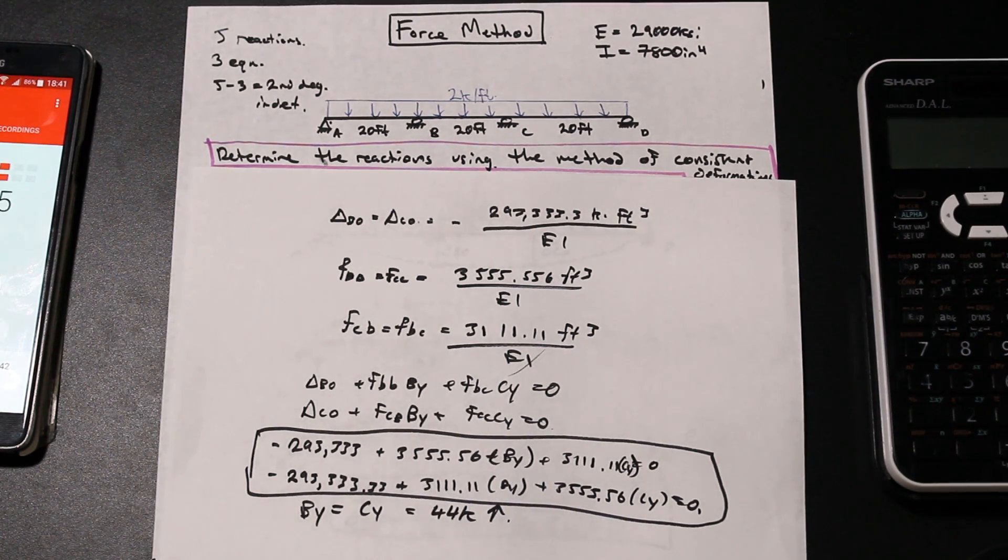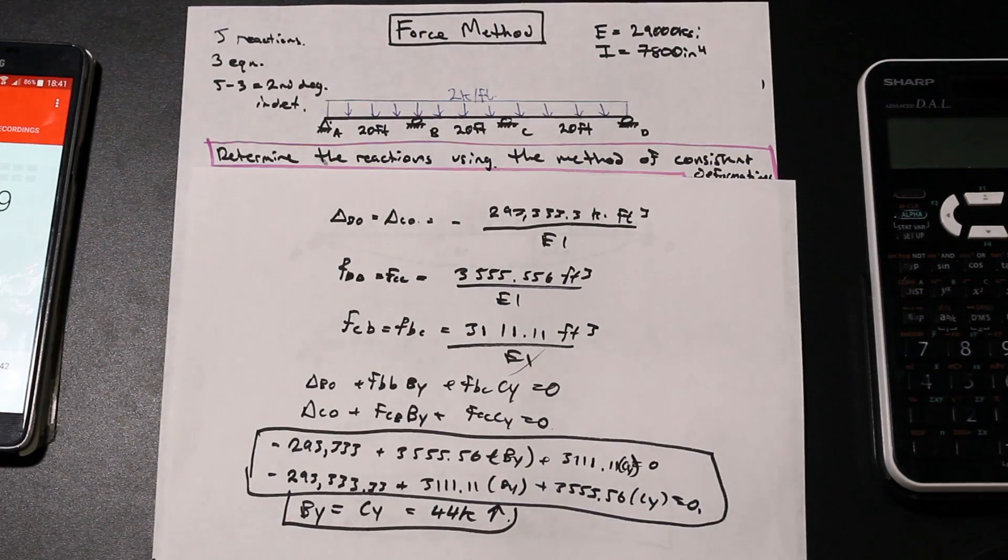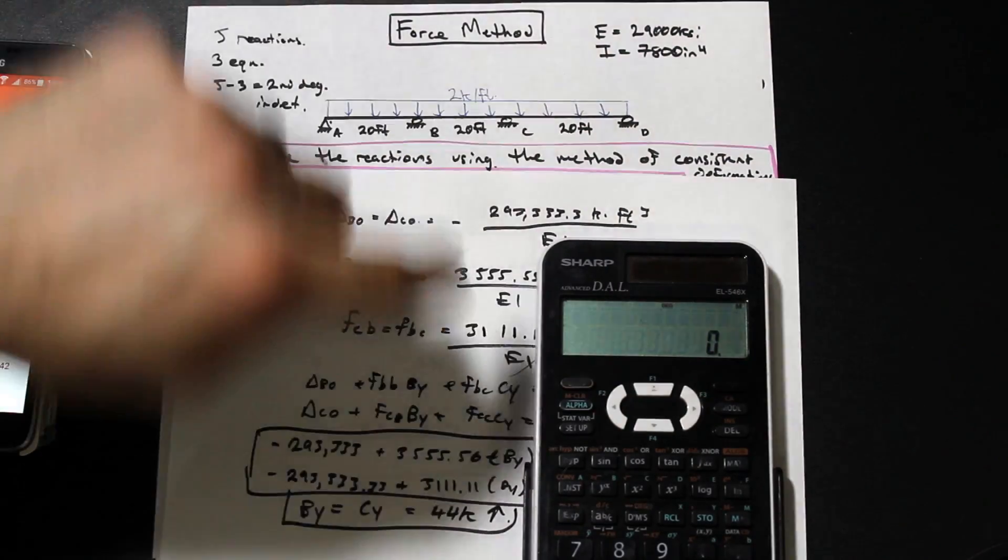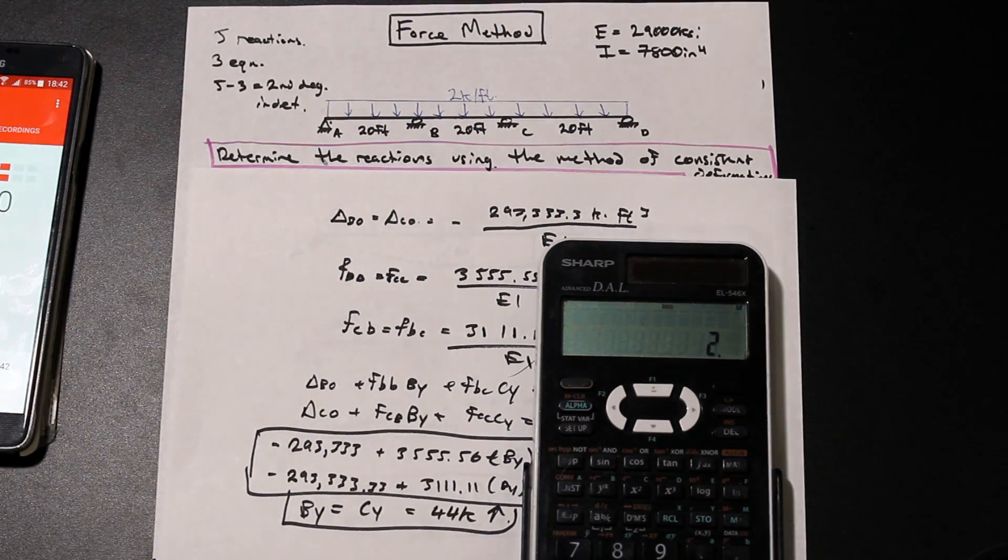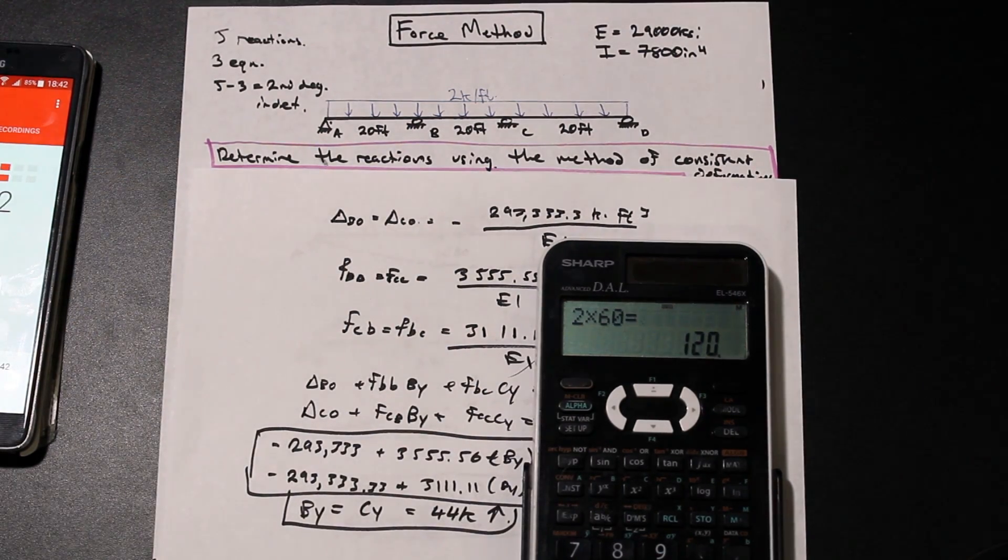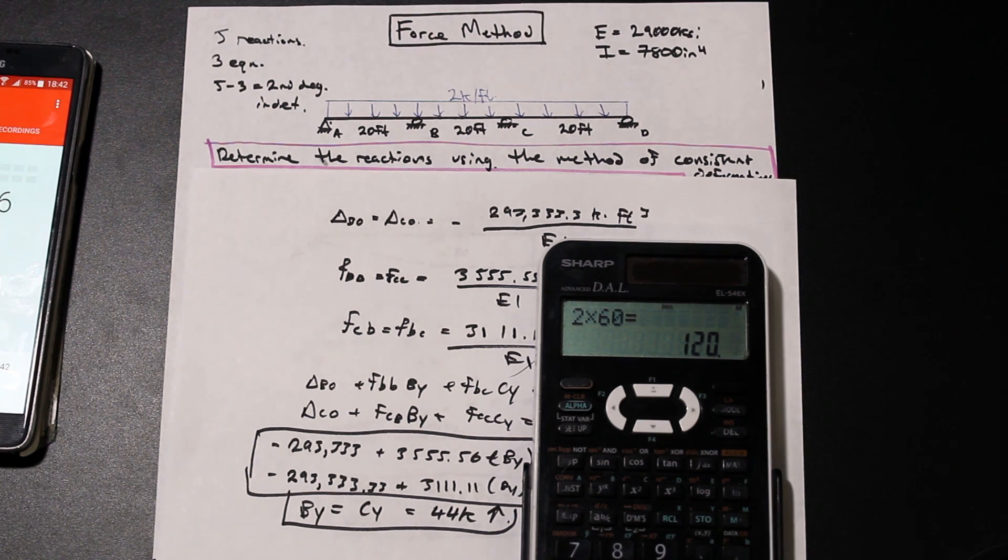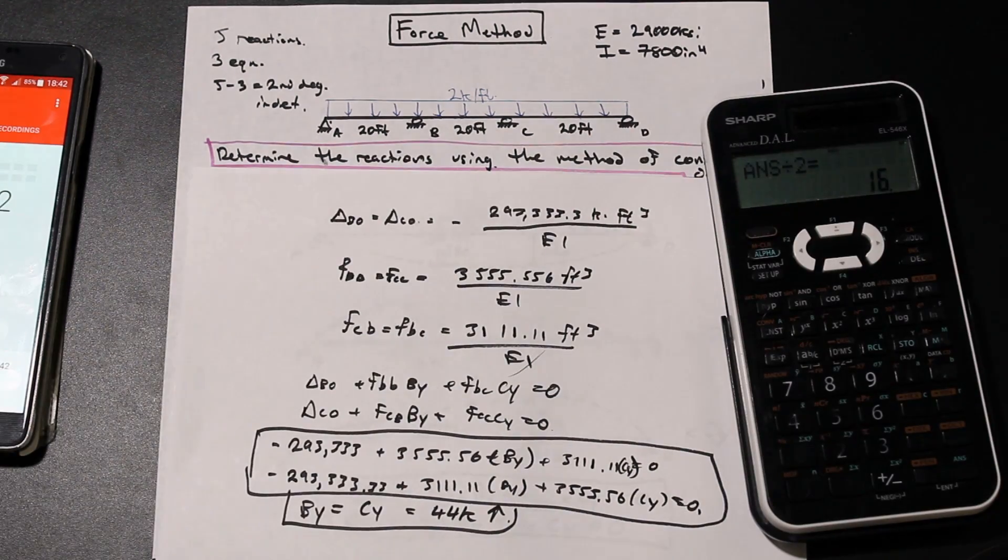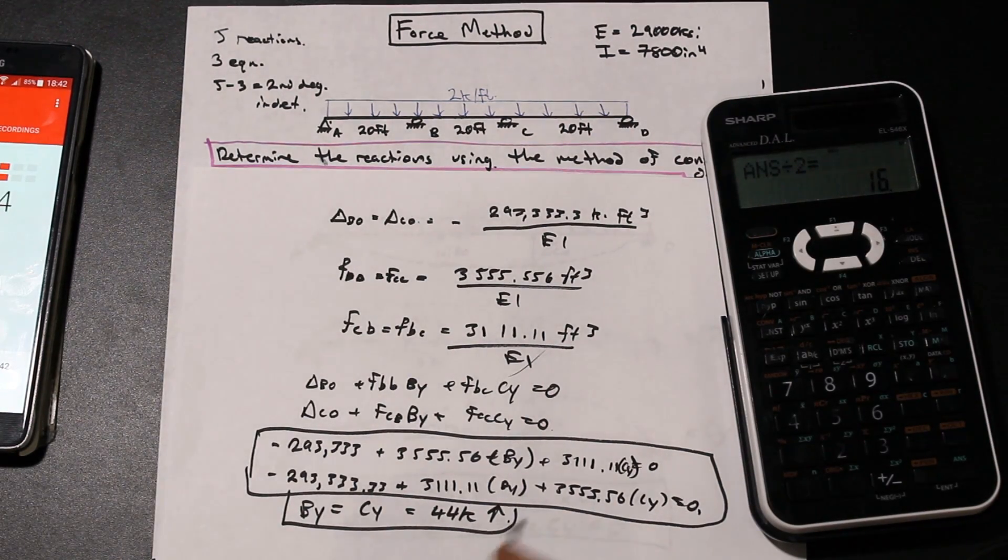And from there we can go ahead and just take the sum of forces. We have 2 times 60, that's going to be the total force acting downwards. And we have BY and CY are both 44, so that's going to be minus 88. That's 32 up, divided by 2, and that's going to be 16. So that means that AY and DY are both 16.